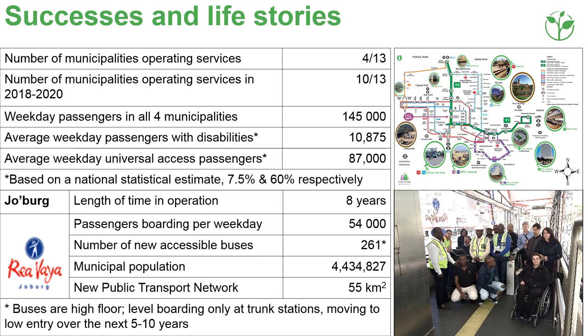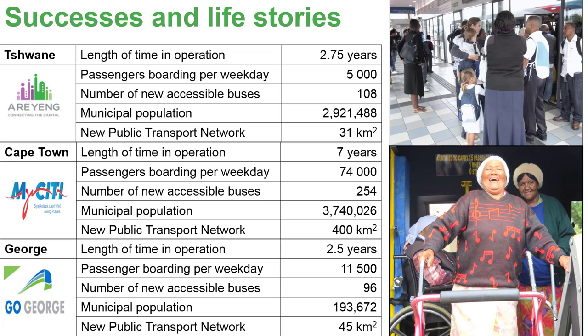There will be 10 new ITN systems by 2020. The systems are called Rivea, Johannesburg, Arrayang, Chwain, Miseti, Cape Town, and George. The operational age of each service, number of passengers per week, number of accessible buses, and number of people who live in each municipality in the area covered by the new network are given.